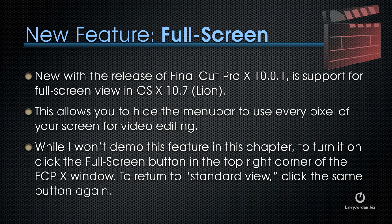If you're running OS X 7 Lion, there's a new feature in the 10.01 release of Final Cut Pro X that might interest you. It's called Full Screen. This allows you to hide the menu bar to use every pixel of your screen for video editing. While I won't demo this feature in this chapter, you turn it on by clicking the Full Screen button in the top right corner of the Final Cut Pro X window.